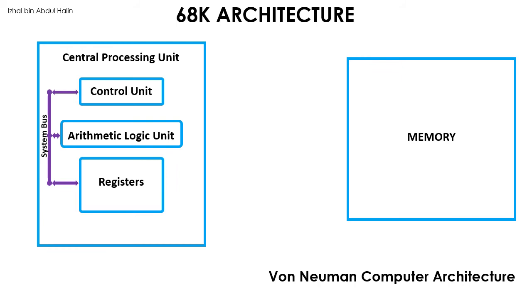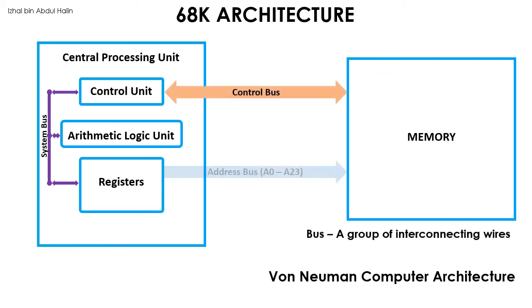The CPU fetches and executes programs by connecting to memory through three buses: the control bus, address bus, and data bus. We will study more on memory in future videos in this series.